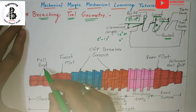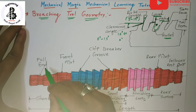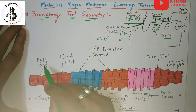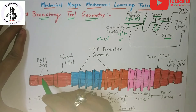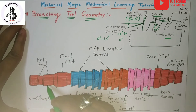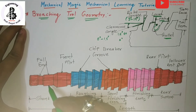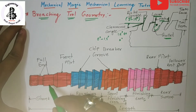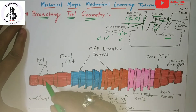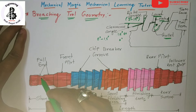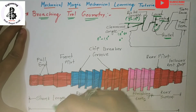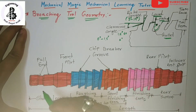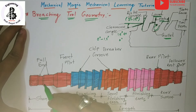Starting with the geometry, the pull end is the initial end of the broach that permits the engagement of the broach with the broaching machine via the puller head grip. It is inserted into the existing hole for making different kinds of shapes on the workpiece material.